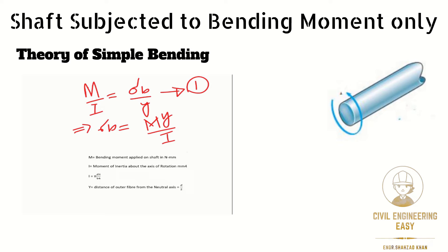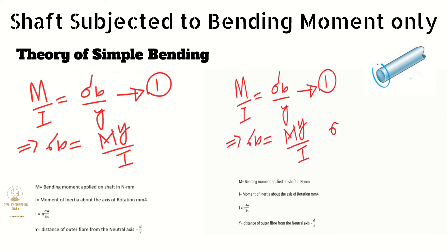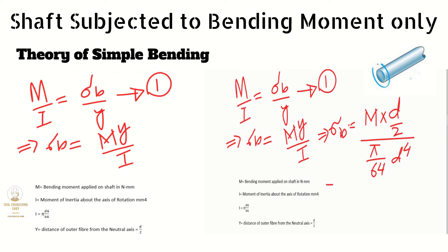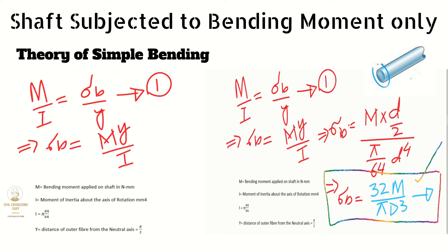By substituting the values of Y and I into the equation, we get σ_B = M × (D/2) divided by (π/64)D⁴. By simplification, we get σ_B = 32M / (π × D³). So the maximum bending stress when the shaft is subjected to bending moment only is 32M/(πD³).